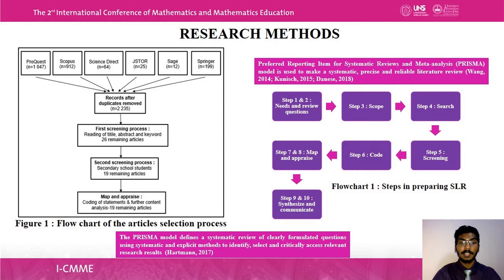The ninth and tenth steps are synthesize and communicate, which will be presented in the results and discussion part. The PRISMA model defines a systematic review of clearly formulated questions using systematic and explicit methods to identify, select, and critically appraise relevant research. There are seven research questions in this systematic literature review article.